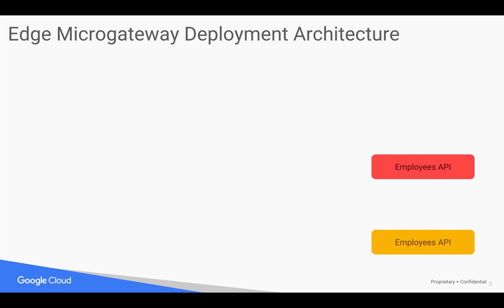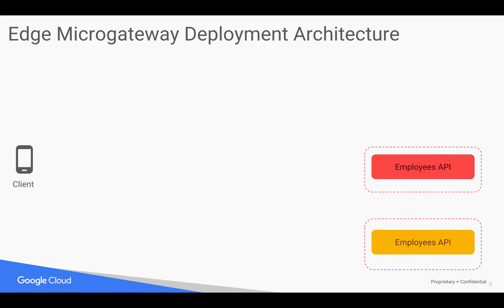For example, let's say you have a back-end service which gives you details of employees — let's call this an employees API, which is running on multiple machines on your back-end. You've decided to use Edge Micro Gateway to do API management for these back-end APIs. A mobile application or a particular client wants to access these APIs, and let's see how Edge Micro Gateway fits into this architecture.